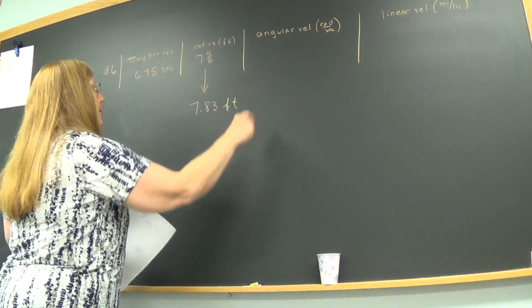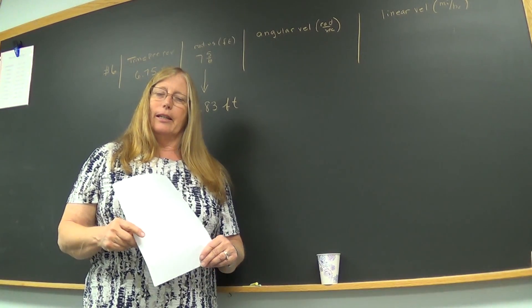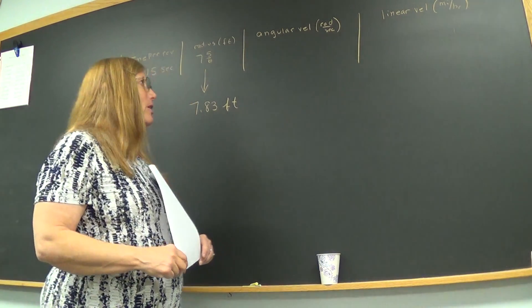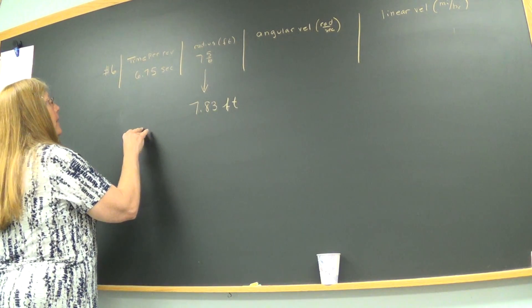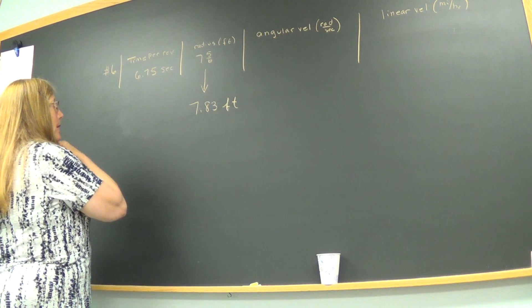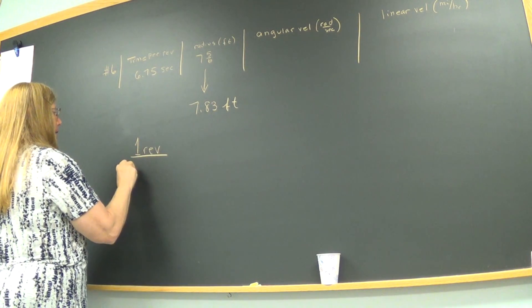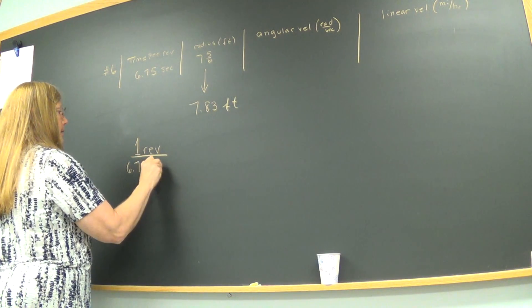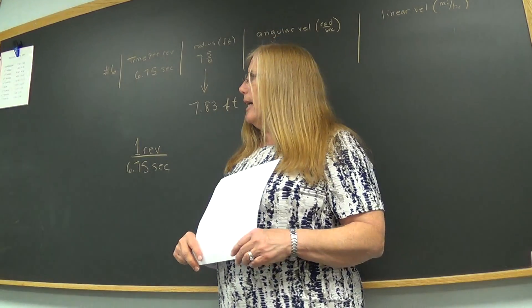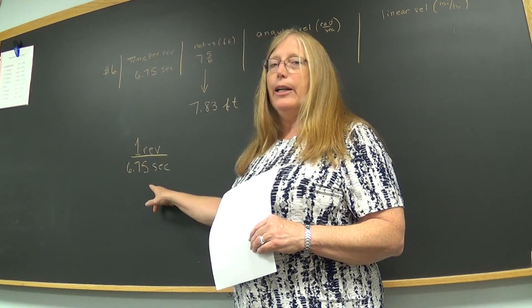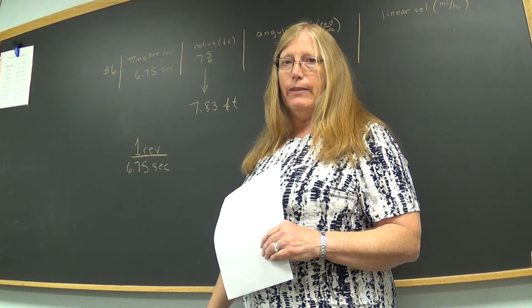I'm going to find radians per second and I need a starting point. The place that I'm going to start on our trig whip number 6 is I'm going to take this information that says that person number 6 traveled one revolution in 6.75 seconds. So every person that you calculate the velocity for, angular as well as linear, you need a starting point.